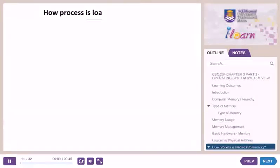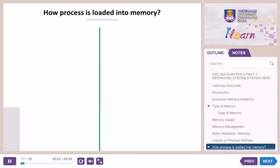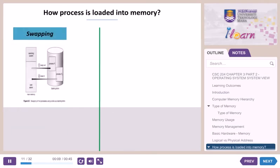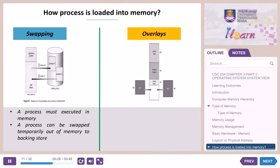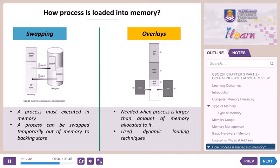How process is loaded into memory. Other techniques that can be used for loading the process into memory are: swapping techniques, whereby the process must be executed in memory — if they have an interrupt or I/O request, they will be swapped temporarily out of memory to backing store, and upon completion, the swapped process is brought back into memory for continued execution. Overlays use dynamic loading techniques, needed when a process is larger than the amount of memory allocated to it. Only those instructions and data needed at any given time are loaded into memory, requiring special support from the OS and complex overlay-structured programming design.